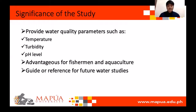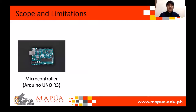Significance of the Study. This study provides the three said water quality parameters which can be advantageous for the fishermen who own fish cages in rivers. This can help them decide whether they will be providing a suitable environment for the fishes or not. This study can also be used for future reference for researchers that will focus their study on water quality.